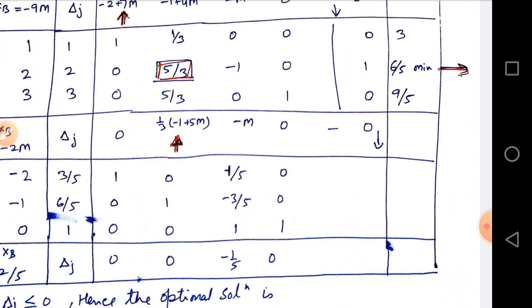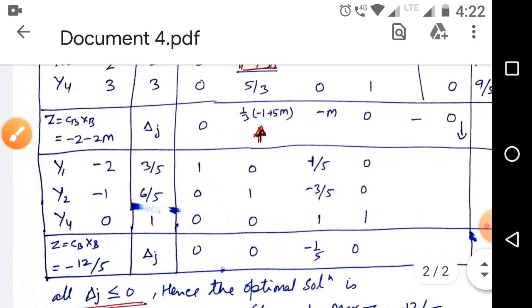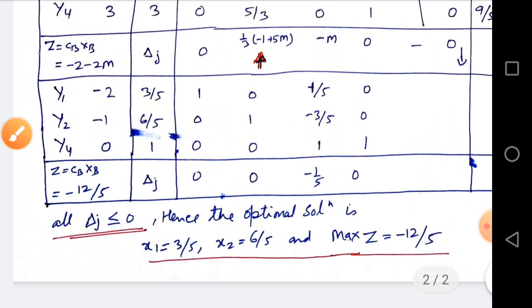When we remove artificial variable A1 and A2, we do not calculate these columns regarding A1 and A2. We leave this, we forget artificial variables because in the basic we have only original variable y1, y2, and slack variable y4.